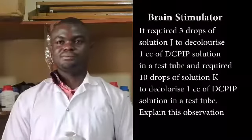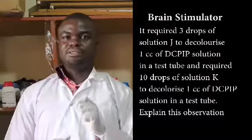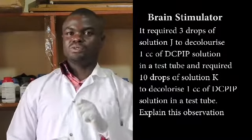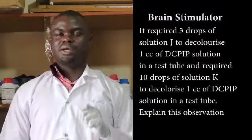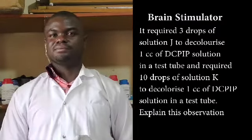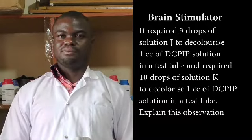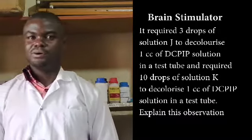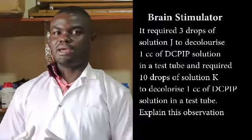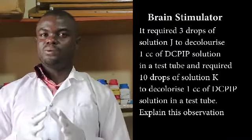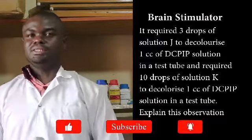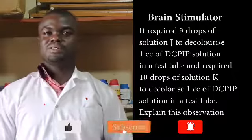And here is your brain stimulator. It required three drops of solution J to decolorize one cubic centimeter of DCPIP solution in a test tube and required ten drops of solution K to decolorize one cubic centimeter of DCPIP solution in a test tube. Explain this observation.